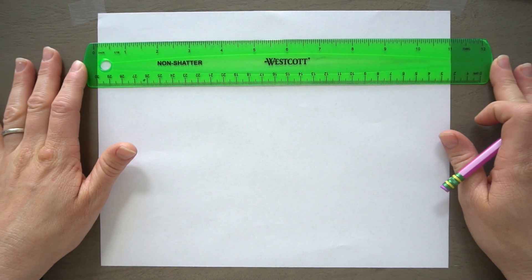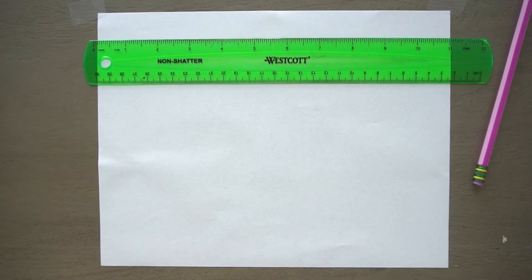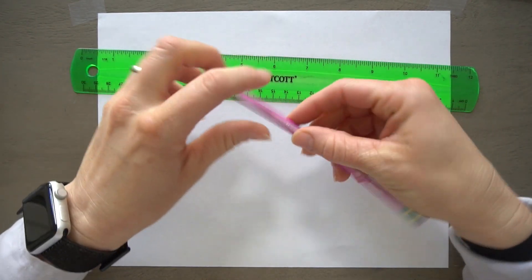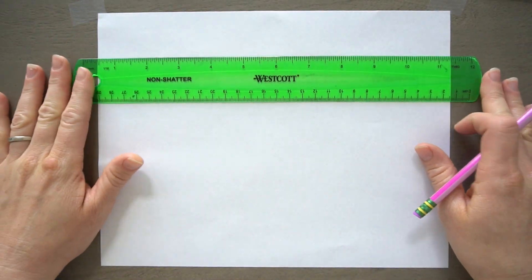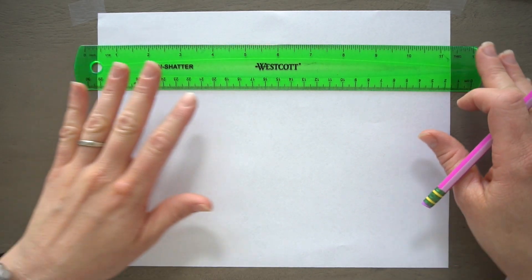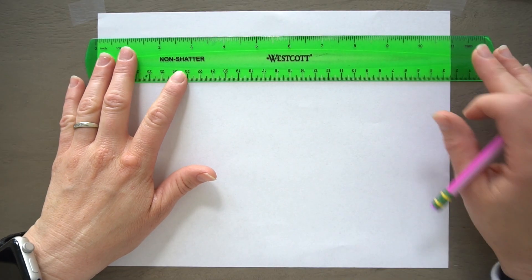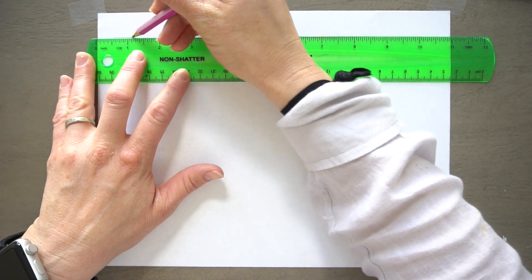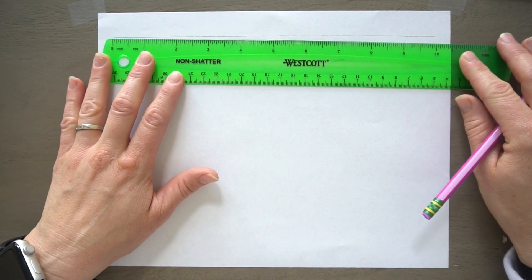So we are going to put our horizon line. And what you need for this lesson, let me just move this cord. You need a piece of paper, a ruler, and something to draw with. I would recommend a pencil, but use whatever you have. And again, if you don't have a ruler, you can kind of eyeball this too.